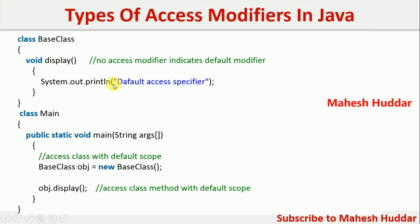This program demonstrates the default access modifier. This display method is defined with the default access specifier because we have not mentioned any access level — not public, private, or protected. Because it is default, it is accessible within this particular class, which is the base class, and also accessible in other classes in the same package. For example, you can access that display method in the main class because the main class is also present in the same package, so we don't get any error for obj.display in the main class.